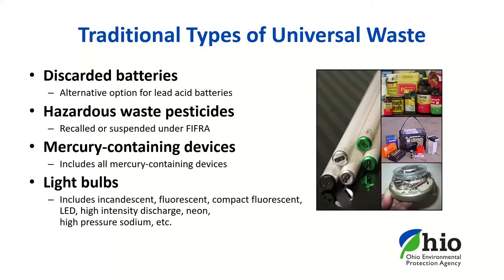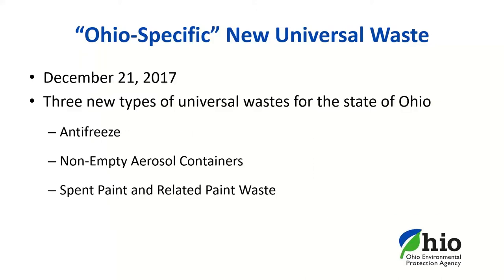The fourth category is light bulbs. This includes hazardous waste lamps that meet the definition in OAC Rule 3745-50-10(A). Lamps can exhibit the toxicity characteristic for heavy metals such as mercury, lead, or cadmium. Examples of universal waste lamps include fluorescent bulbs, high-intensity discharge bulbs, mercury vapor, high-pressure sodium, and metal halide lamps. On December 21, 2017, Ohio EPA added three new types of universal waste: antifreeze, aerosol containers, and paint and paint-related wastes.